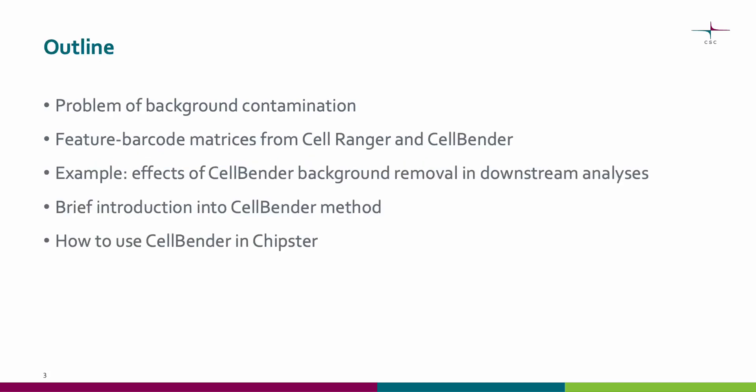We will first go through the problem of background contamination in single cell RNA sequencing data. Then we will compare the feature barcode matrices generated by CellRanger and CellBender. Then we will go through an example to show why CellBender could be useful before downstream analyses. After that, we will briefly go through the CellBender method. Finally, we will look at how to use CellBender in Chipster.